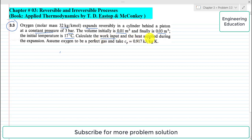The initial temperature is 17 degree centigrade. Calculate the work input and the heat supplied during the expansion. Assume oxygen to be a perfect gas and take Cp as 0.917 kilojoule per kilogram kelvin.